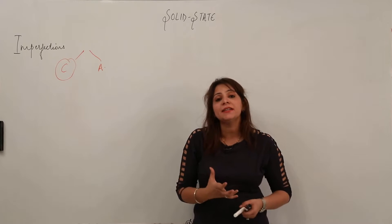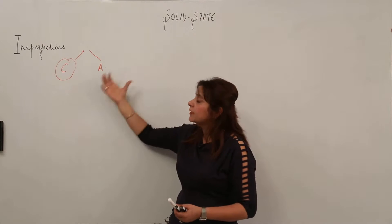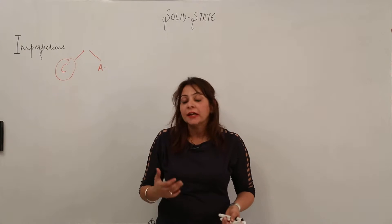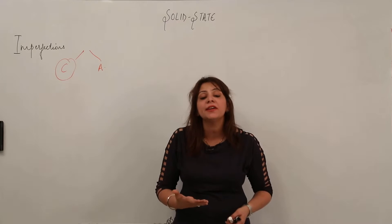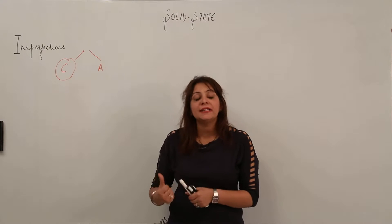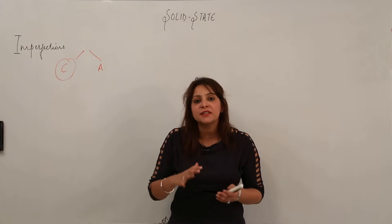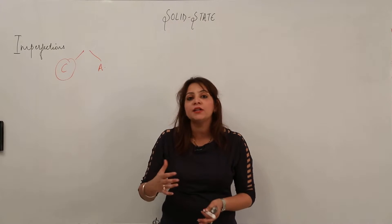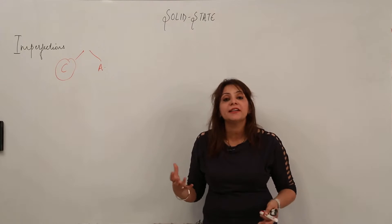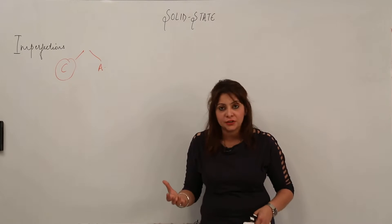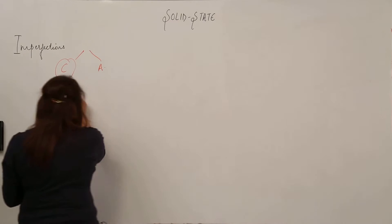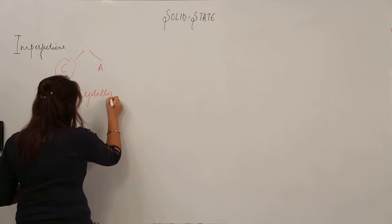What is the reason we get to see imperfection, whether in crystalline or amorphous substances? The reason behind the imperfection is the crystallization speed. When a substance is formed, its particles actually need time to get arranged. The crystallization speed can be fast, moderate, or very slow.